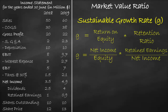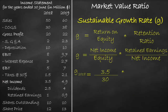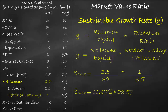Let's calculate the sustainable growth rate for the year 2018. Net income equals $3.5 million from the income statement, divided by the shareholders' equity of $30 million from the balance sheet, multiplied by retained earnings of $1 million from the income statement, divided by net income of $3.5 million from the income statement. This equals a return on equity of 11.67% multiplied by a retention ratio of 28.57%, giving a sustainable growth rate of 3.33%.